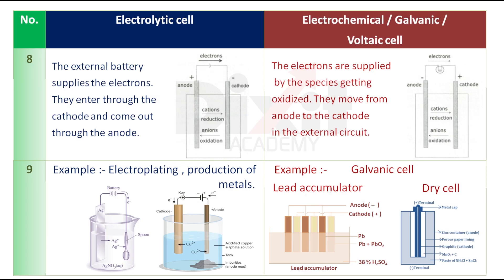Common examples of electrolytic cells include electroplating and production of metals. Common examples of electrochemical cells include galvanic cells, lead accumulators, and dry cells.